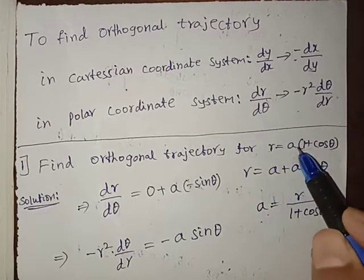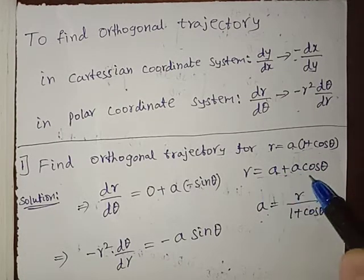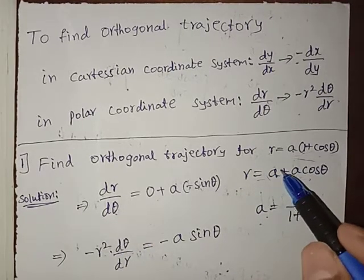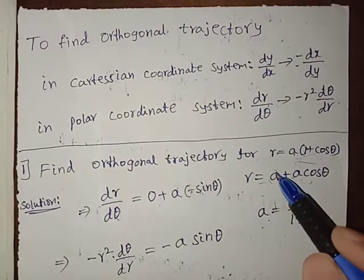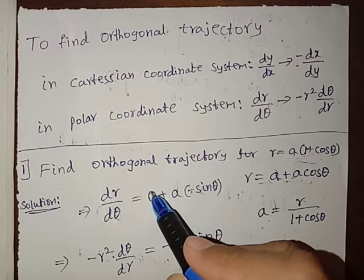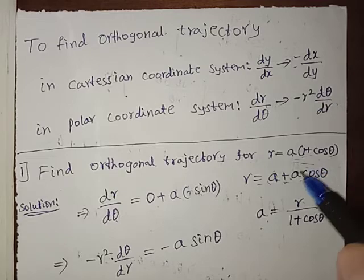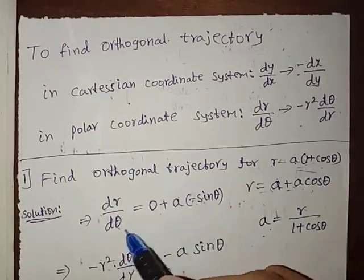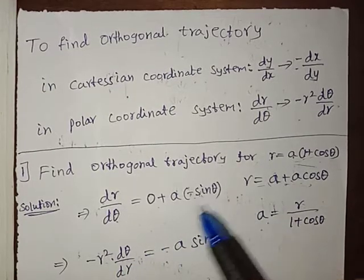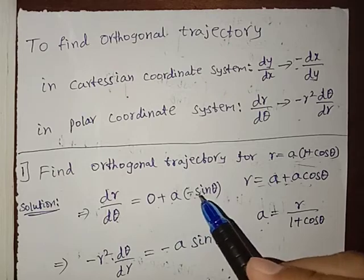We can write r = a + a cosθ. Differentiating with respect to θ: the constant a gives 0, and the differentiation of cosθ is minus sinθ. So we get dr/dθ = minus a sinθ.